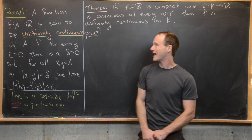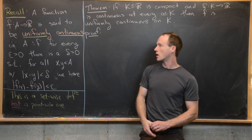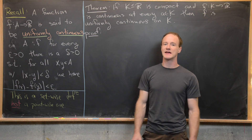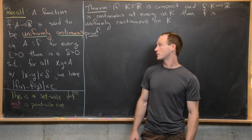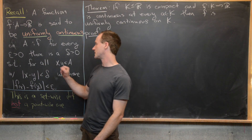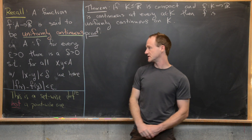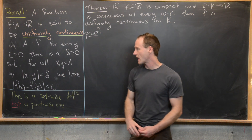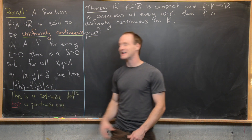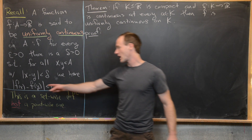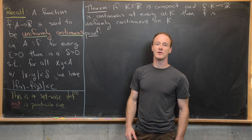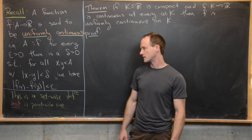A function f from A to ℝ is said to be uniformly continuous on A, where A is a subset of the real numbers, if for every epsilon greater than zero, there is a delta greater than zero such that for all x, y in A that are within delta of each other, their outputs f(x) minus f(y) are within epsilon of each other.